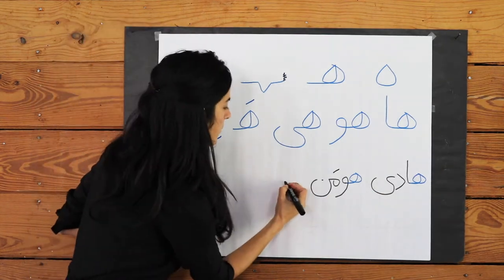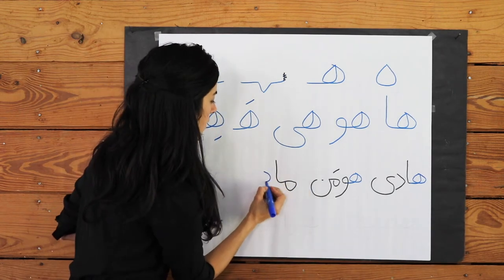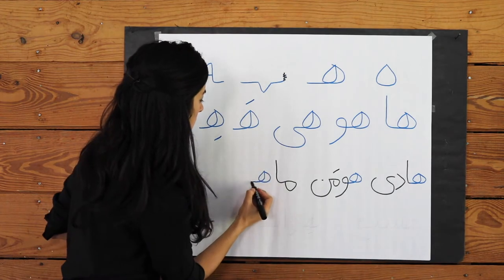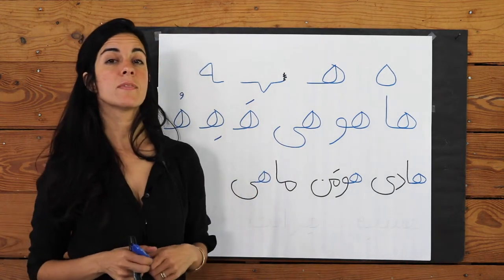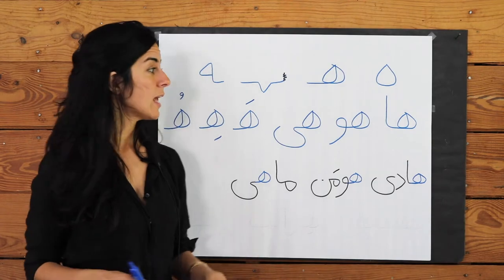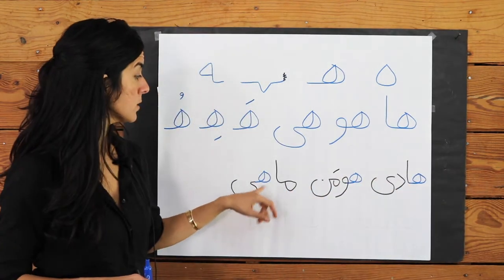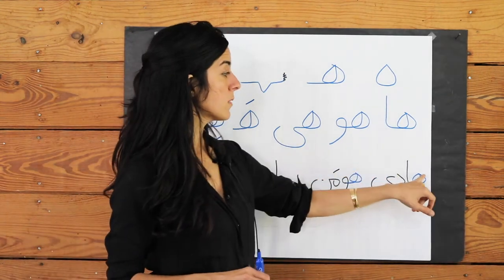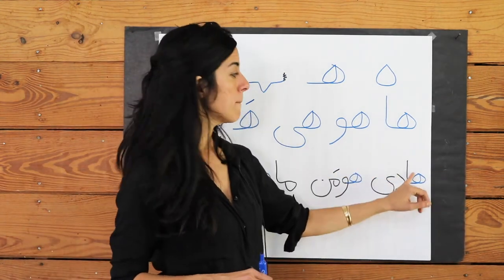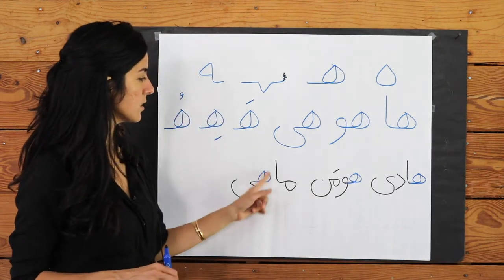Then combining H with our E sound: Mahi — and that means a fish. You can see we've used the same version in all three of the words because the letter has come with nothing before it but a letter after it, so it takes on this beginning-of-word form.